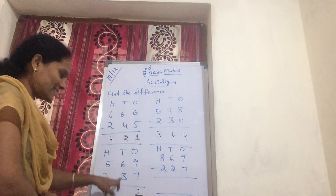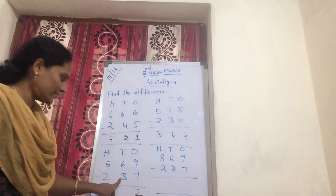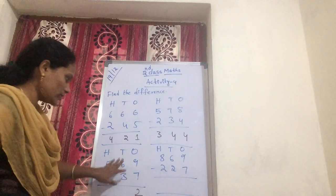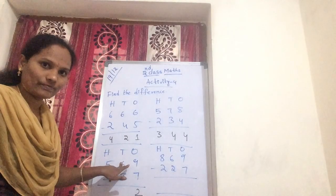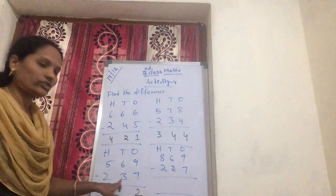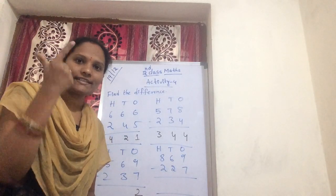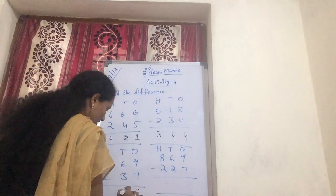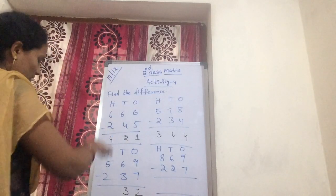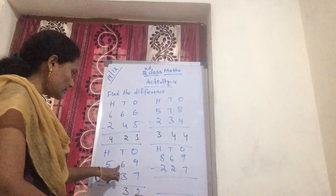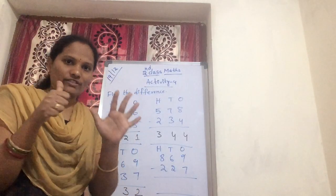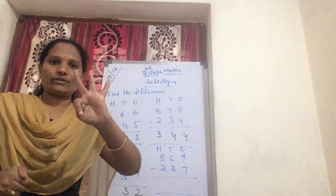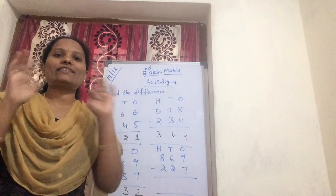Now next, coming to tens — 6 minus 3. Count after 3: 3 after 4, 5, 6 — you get how many fingers? 3 fingers. So write 3 in tens. Again explaining the first method: 6 minus 3 — show 6 on your fingers, removing 3: 1, 2, 3. So here also you get 3. Both answers are equal.